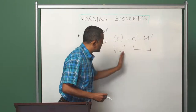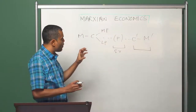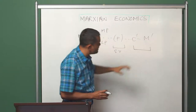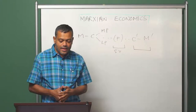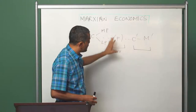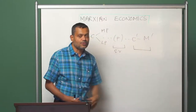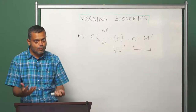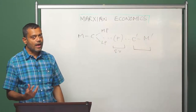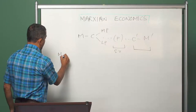Therefore, a capitalist class which specializes — which separates out from the industrial capitalist and starts specializing in organizing activities related to the realization of surplus value — emerges. And that fragment of capital is what Marx calls merchant capital.